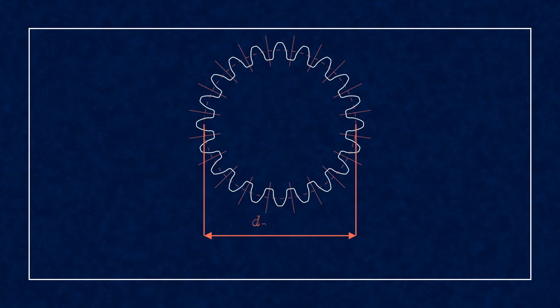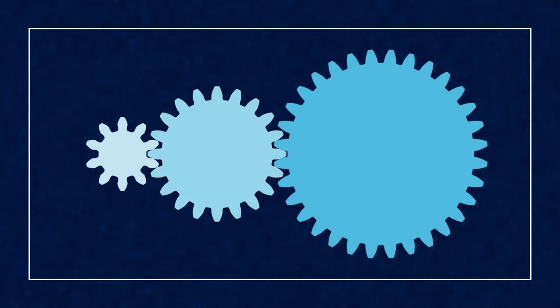Now let's add another gear. Since the pitch circles touch, the axial distance equals to the sum of pitch radii, which becomes the module times Z1 plus Z2 over 2.